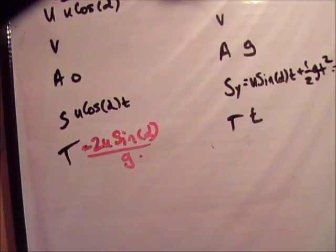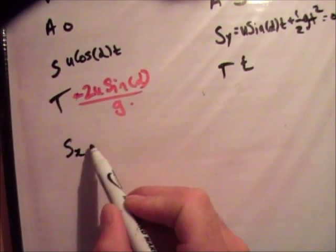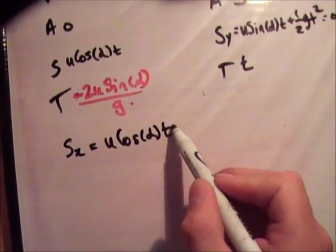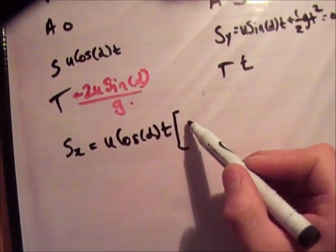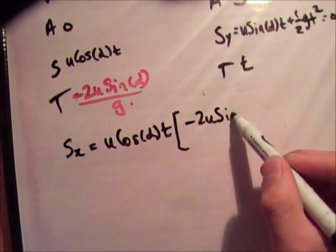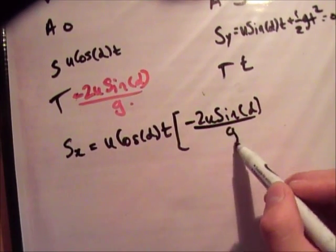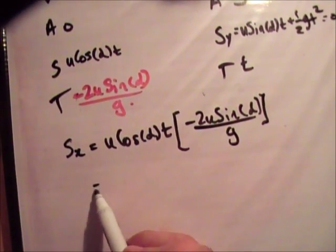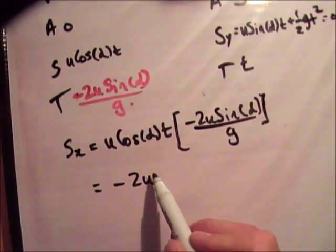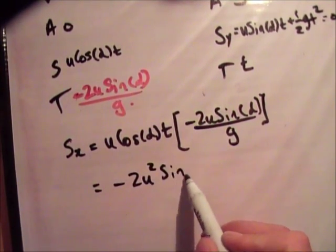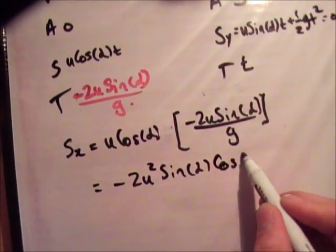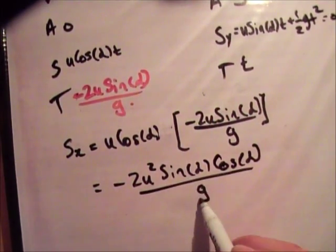And next thing we're going to do is plug in our value for t. So we just multiply that out, that t, by the way, that's incorrect, over g.